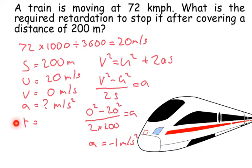Then we're going to apply the SUVAT equation. Let's look at what we've got. We know the distance is 200 meters. The initial velocity is 20 meters per second. It's going to rest, it's going to stop. The final velocity is 0. A we're trying to find out, and T we don't know.